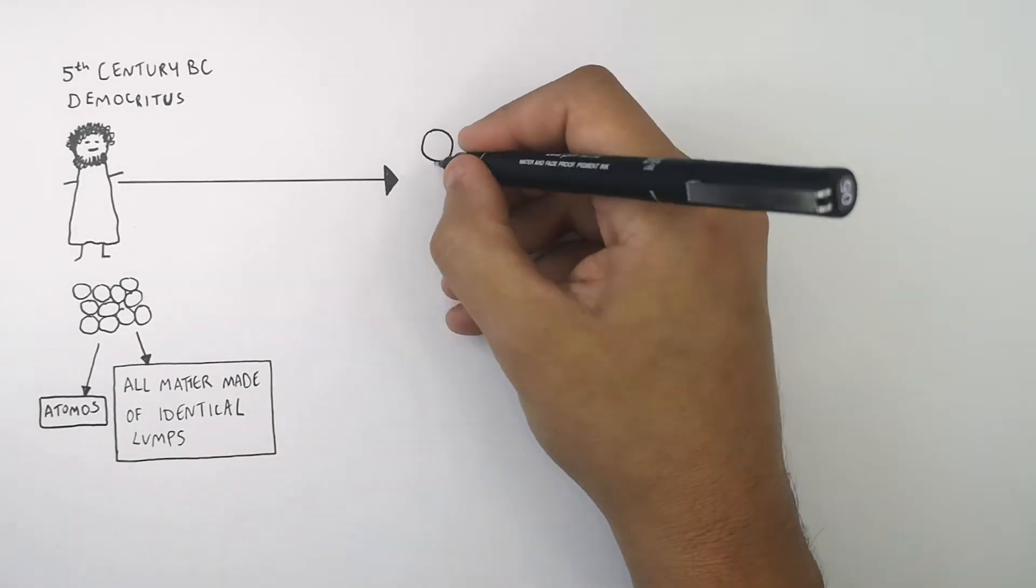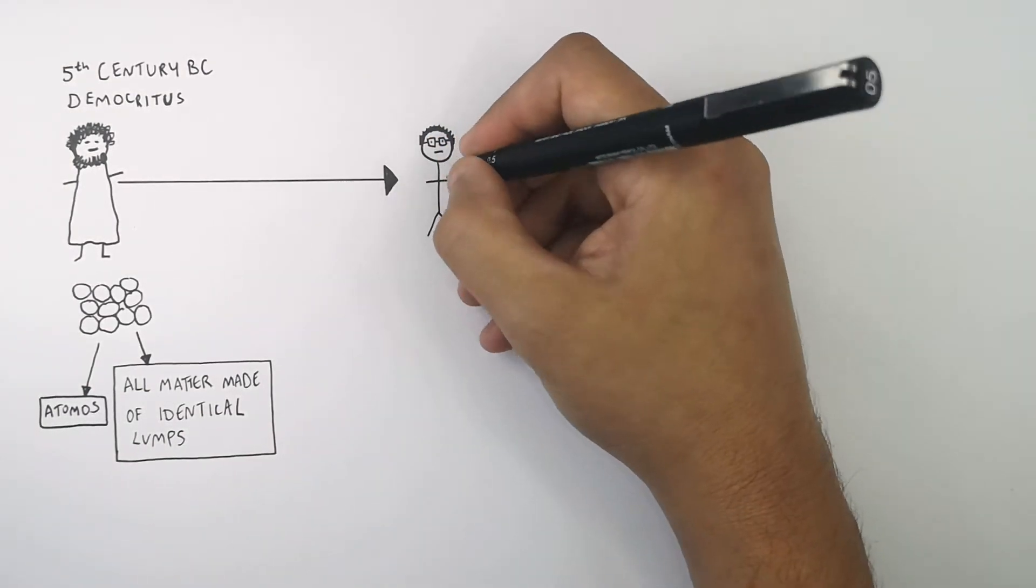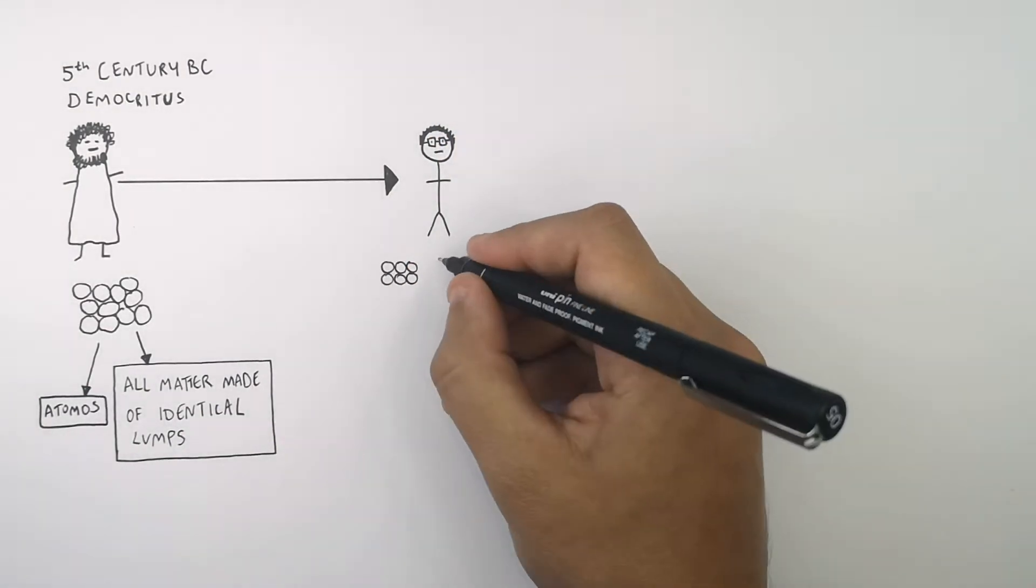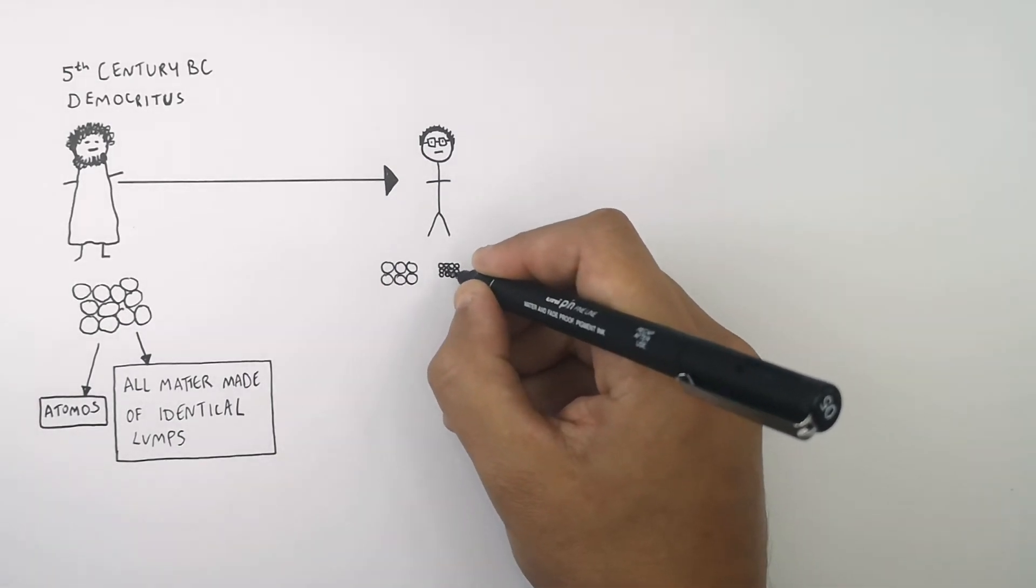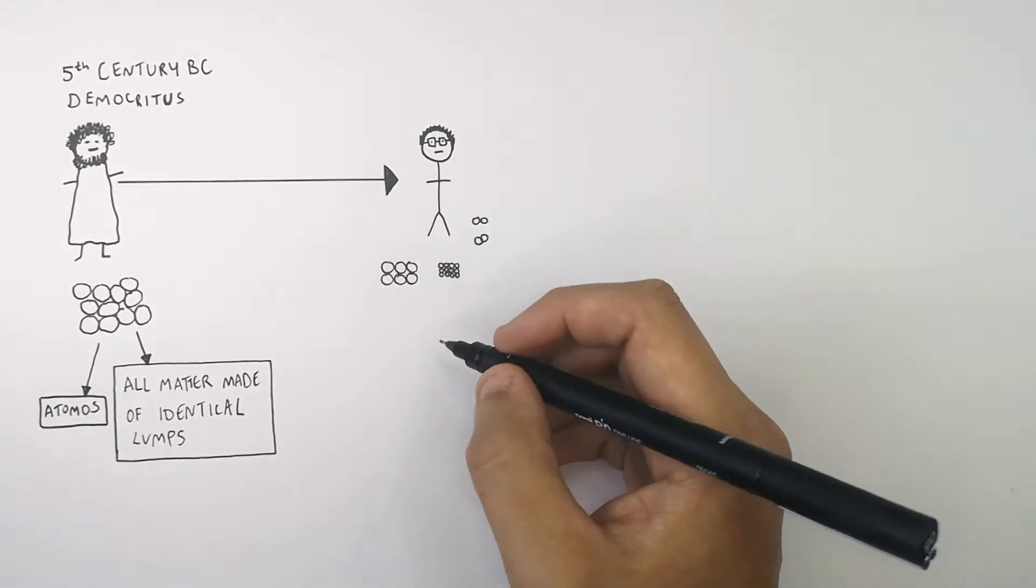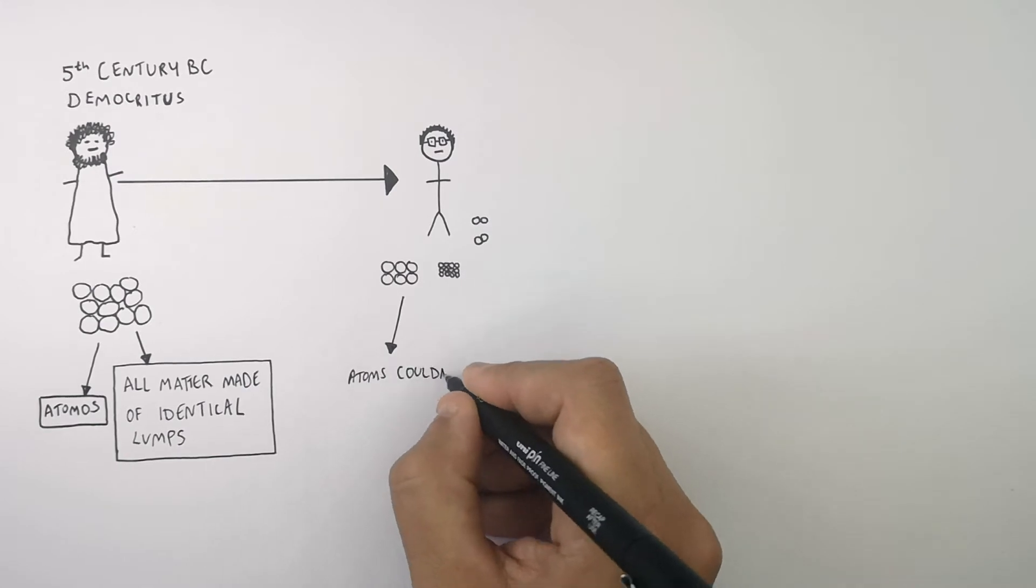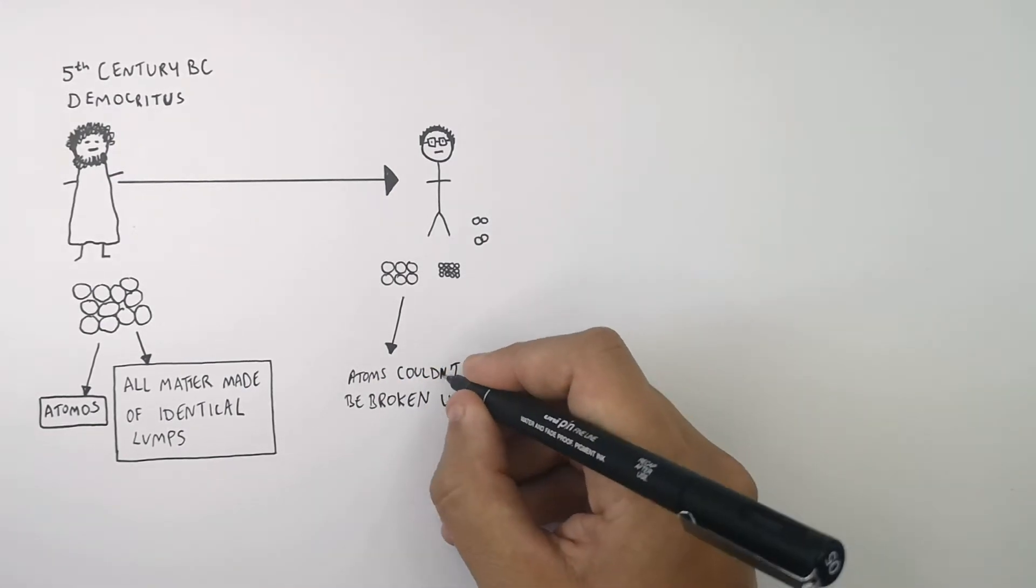So fast forward to 1804, and a scientist called John Dalton stated that atoms existed. But atoms couldn't be broken up into any smaller pieces, and that atoms couldn't be broken up into any smaller particles.